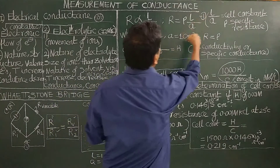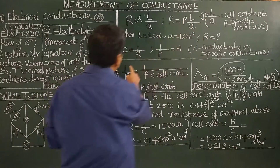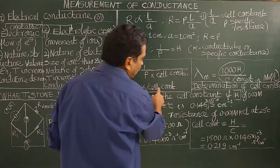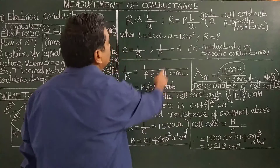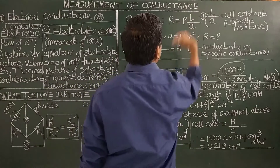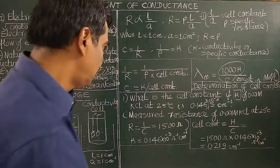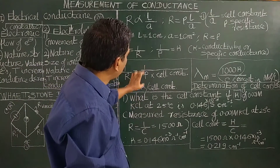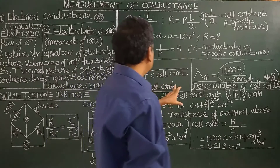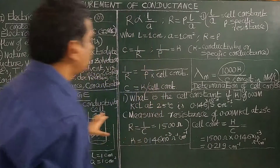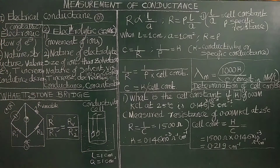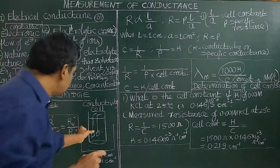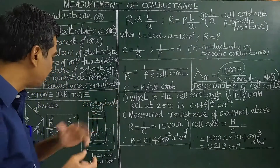On taking the reciprocal, G = κ divided by the cell constant, because l/A is the cell constant. So this expression G = κ / (cell constant) is used to calculate the cell constant. Remember, for each cell the cell constant will vary, because the length and area measurements are not always reliable.